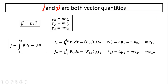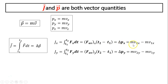J and p are both vector quantities. Impulse J has the same direction as the force; p has the same direction as velocity. Because they are vector quantities, they have x and y components: px equals m·vx, py equals m·vy, pz equals m·vz. Similarly, Jx equals Fx times t, which equals the change in px — that is, m·v2x minus m·v1x. The same applies in the y direction for the change in velocity in y.